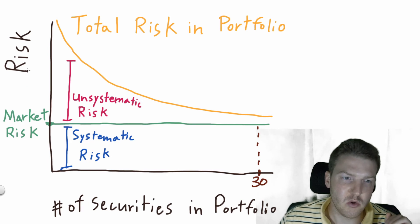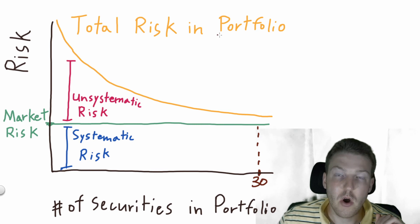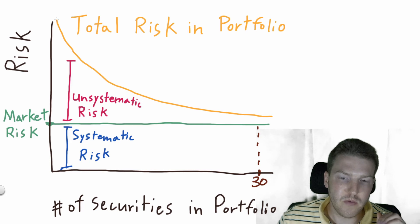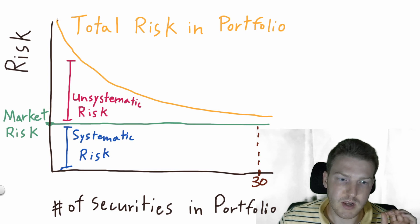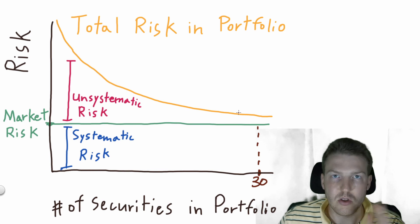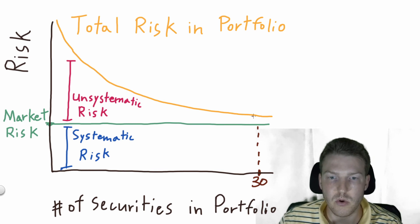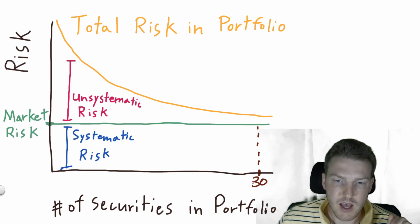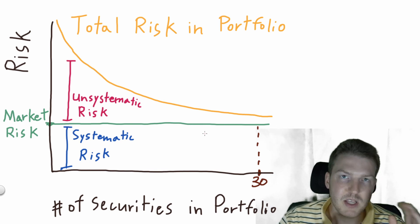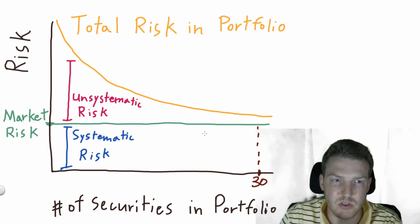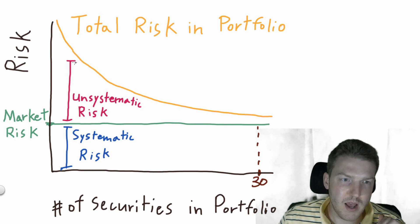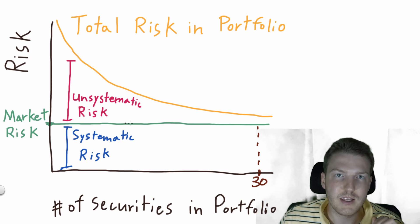The orange line represents the total risk in the portfolio based on the number of securities you hold. The fewer securities you have, the more total risk you're taking. As you add securities, you take smaller and smaller amounts of risk — you can see it decreasing, getting closer and closer to the green line, which is market risk. I've marked 30 specifically because many studies show that after you have 30 different securities in your portfolio, almost all of the unsystematic risk is diversified away. At any given point on this graph, the difference between the orange line and the green line is the unsystematic risk.